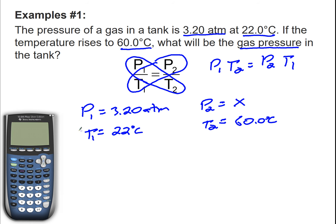My same units for all my variables, but temperature has to be in Kelvin. It cannot be in Celsius. So I'm going to convert 22 degrees Celsius. So 22 plus 273 is going to be 295 Kelvin. And 60 degrees is going to be 333 Kelvin.